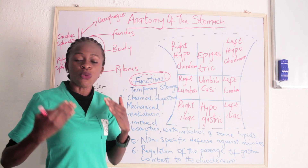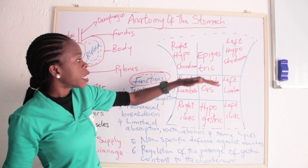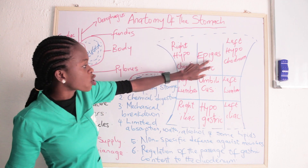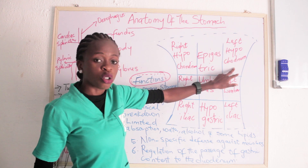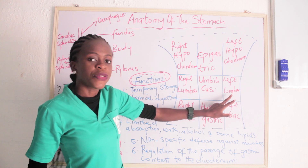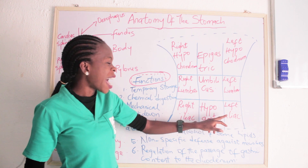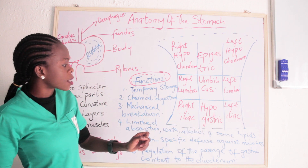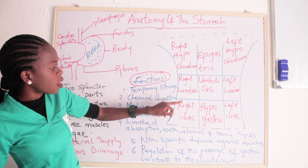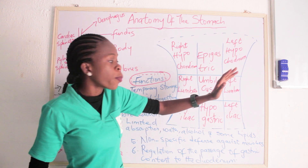For students preparing for their nursing and medical entrance exams, they may ask you to describe the nine regions of the abdominal cavity. The upper part, which is closer to the diaphragm, is the right hypochondriac, the epigastric region, and the left hypochondriac. Then the middle part is right lumbar, the umbilical, and the left lumbar. Then the lower part is the right iliac, hypogastric, and the left iliac. To remember this, take note of the acronym HLI — hypochondriac, lumbar, and iliac.